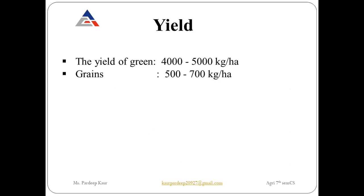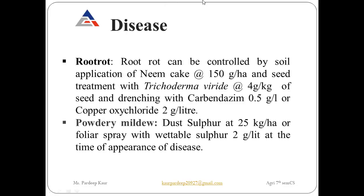Finally, the yield: if fenugreek is harvested at the leafy or green stage, the yield is 4,000 to 5,000 kg per hectare. If harvested for grain, the yield is 500 to 700 kg per hectare. This concludes the production technology and cultivation of fenugreek.